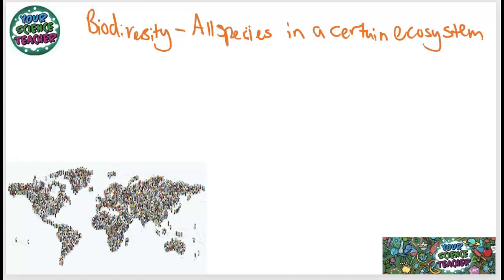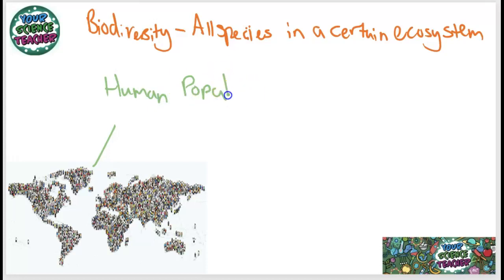Maybe it's a predator-prey relationship, maybe it's a relationship between a plant and an animal. Biodiversity is, however, being threatened, and this can mainly be attributed to the human population explosion. This basically means that humans are taking over the planet and their numbers are growing massively, and other species are unfortunately having to suffer because of this.